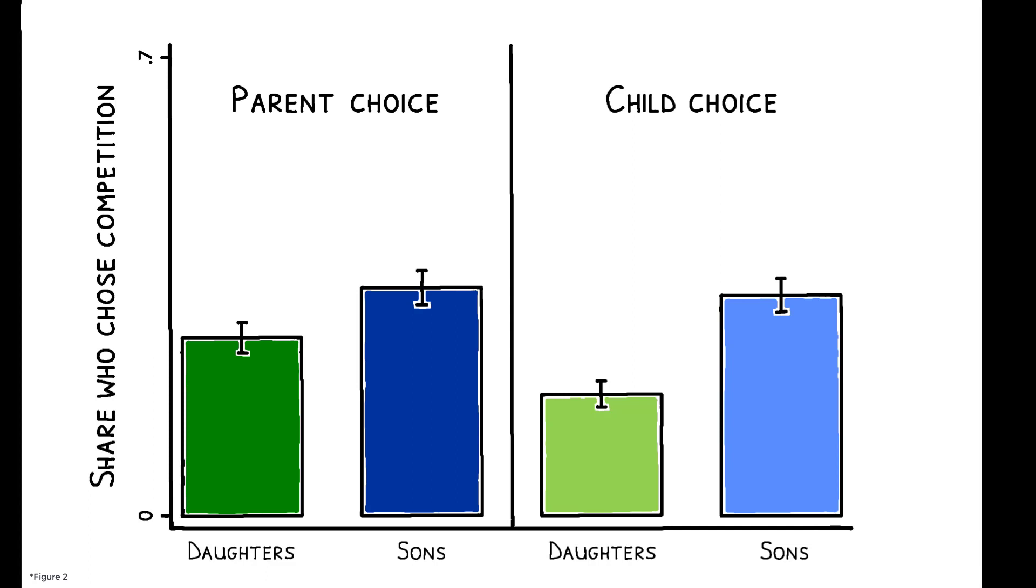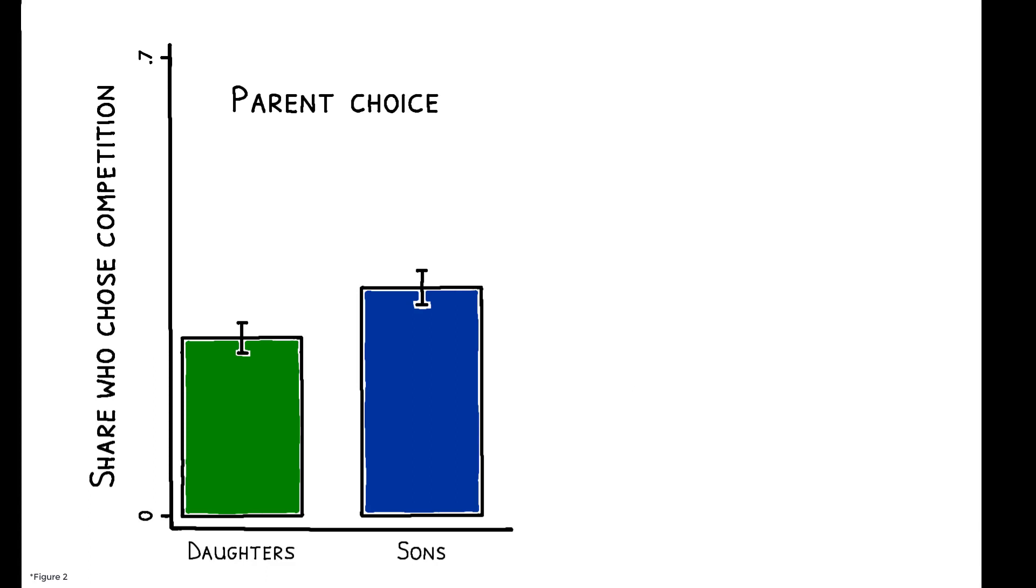Parents are 28% more likely to choose competition for a son than for a daughter, and this gap persists even after accounting for risk preferences and parents' beliefs about their child's probability of winning the competition.